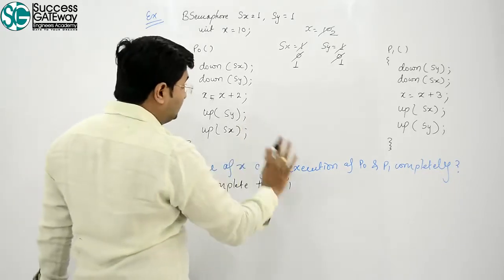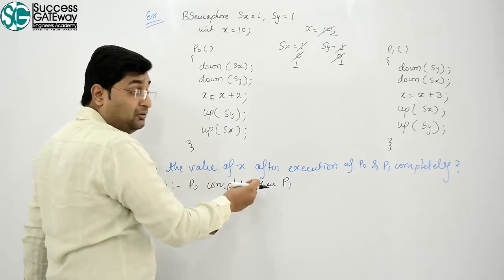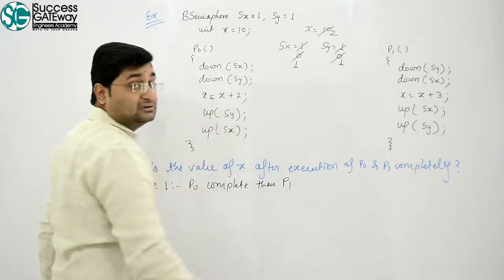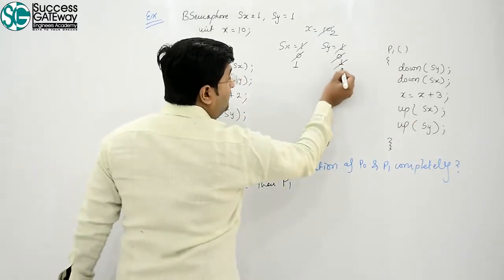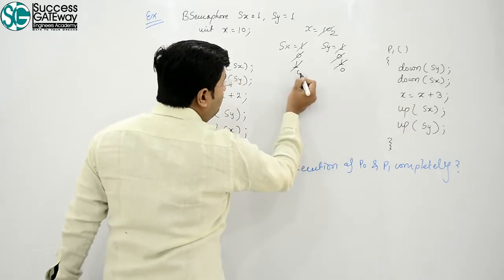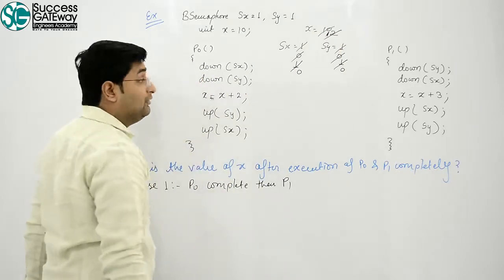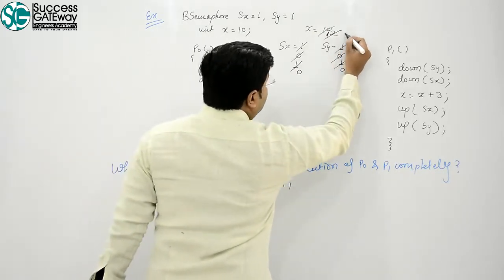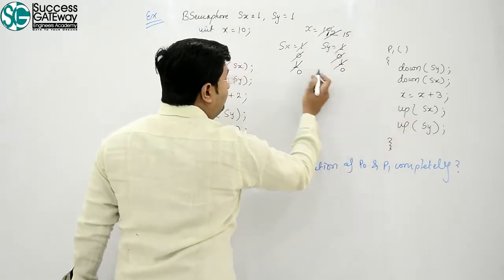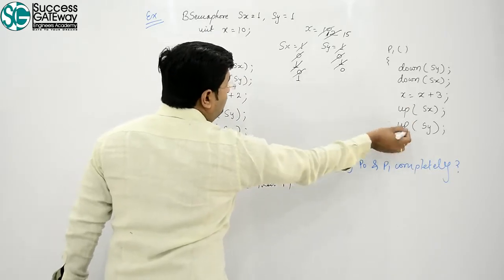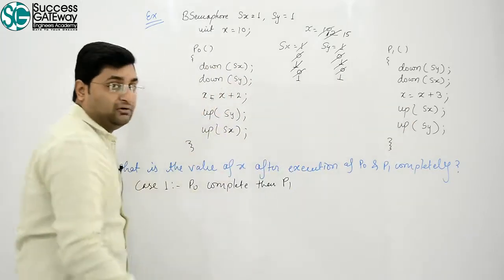That was P0. Now P1 process. Sy is downed, Sx is downed. X value... sorry, sorry. 10 plus 2 is 12. And 12 plus 3 is 15. Then Sx becomes 1, and Sy becomes 1.